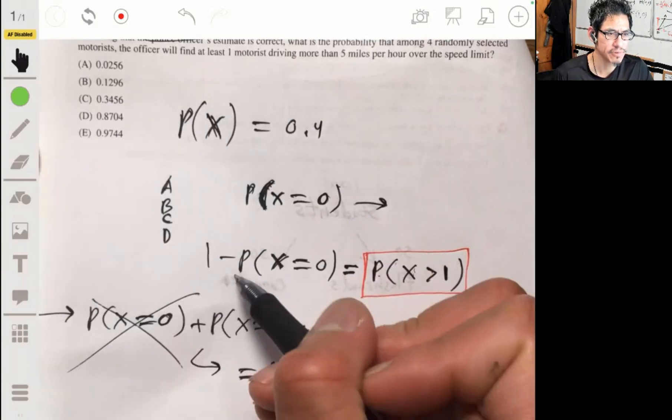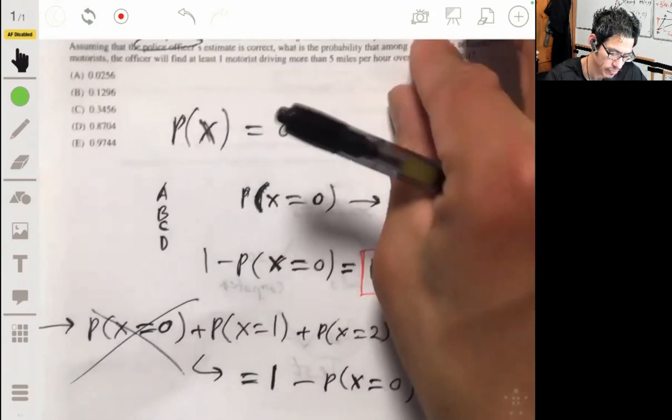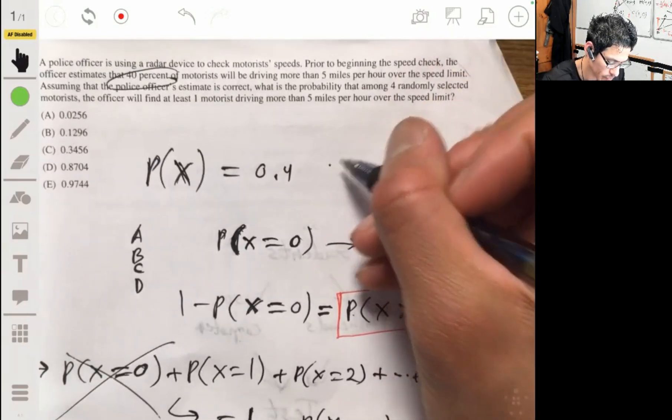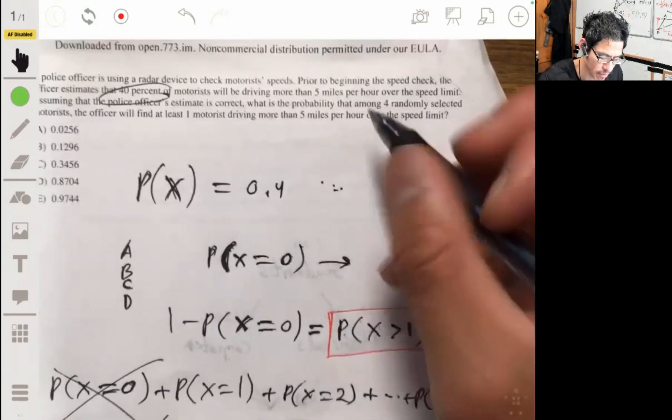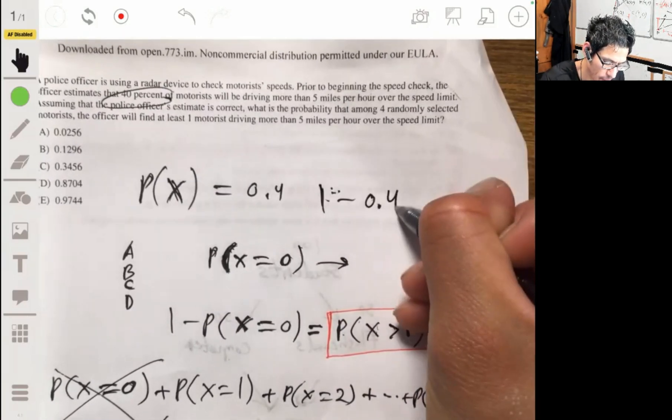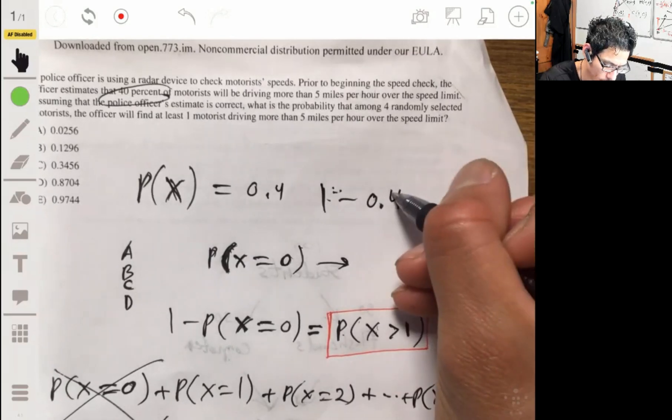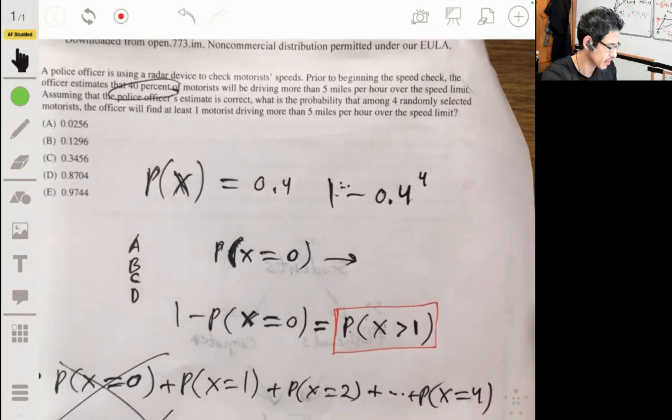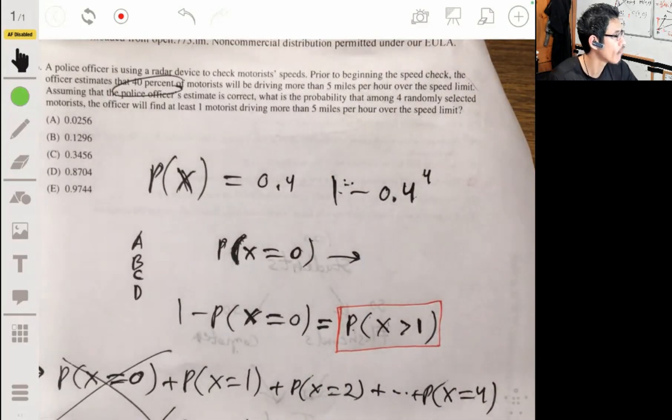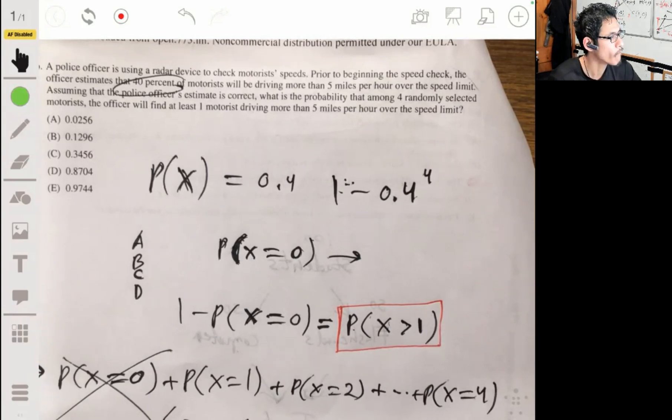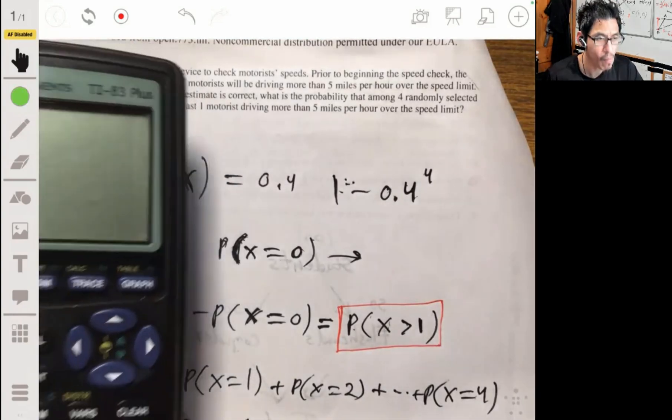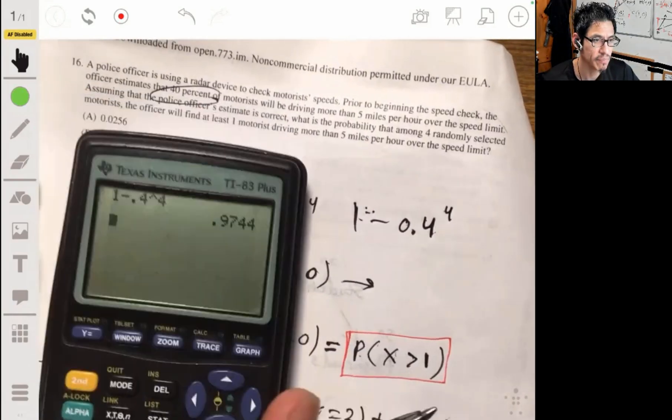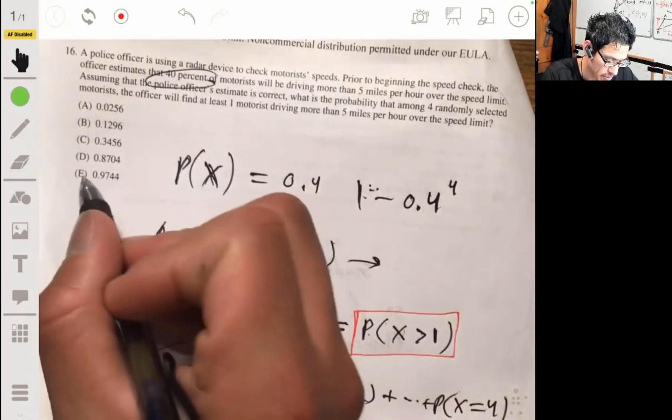So instead of solving for all this, we just do it the other way. We just subtract the probability that X equals zero from both sides. And then we end up being one minus the probability that X equals zero. Right now, we're going to have one minus 0.4 to the fourth. And we just plug and chug. One minus 0.4 to the fourth, and we'll get about 97.5 percentage. The answer is E.